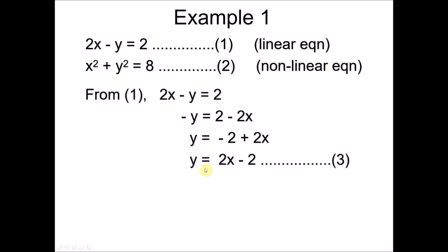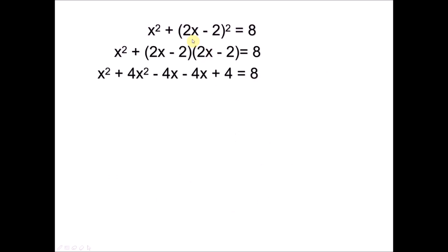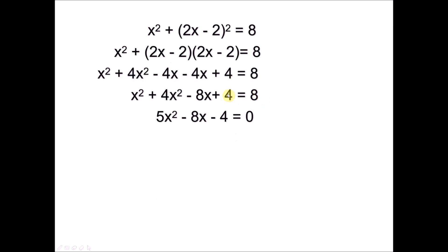Equation 3 is still a linear equation, and we substitute it into the nonlinear equation, which is equation 2. The y in equation 2 is substituted by 2x minus 2. We then expand and simplify: x squared plus 4x squared gives 5x squared, and negative 4x minus 4x gives negative 8x. Solving further gives us 5x squared minus 8x minus 4 equals zero.